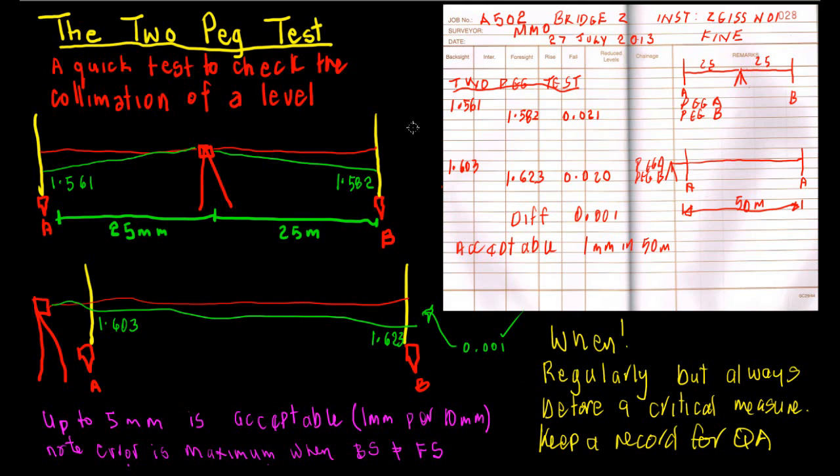However, it is reasonable to assume that the error would be the same throughout the 360 degrees wherever you pointed the level. The error would be the same at the same distance.